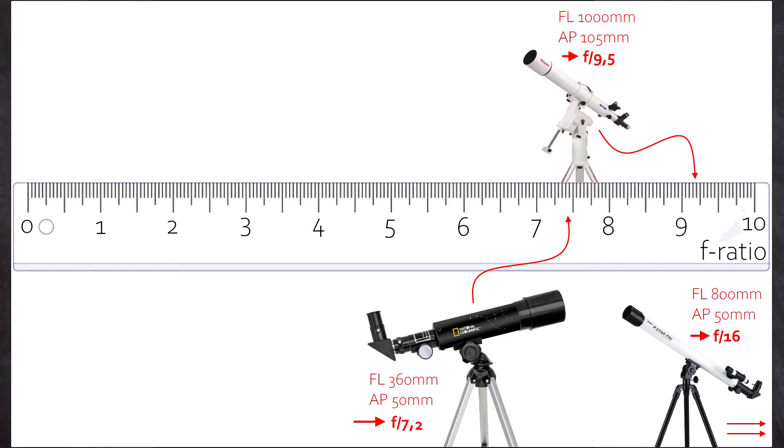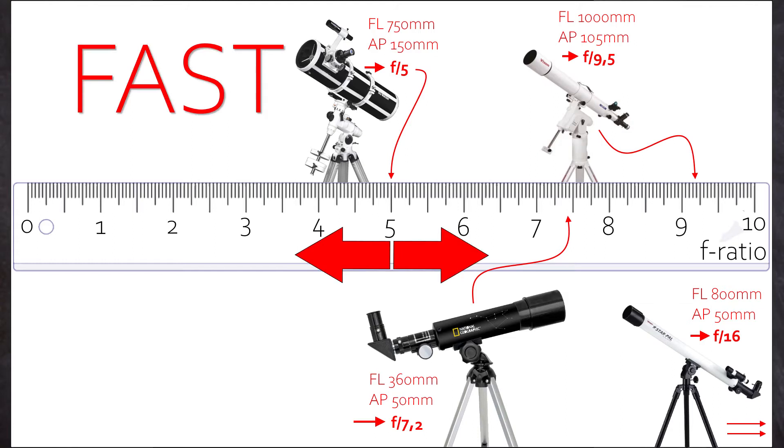The next scope enters the range of what we can call fast scopes. It's my beloved Skywatch Newtonian. With 750mm focal length it's intermediate long, but with an aperture of 150mm it can collect lots of photons. That gives us f5.